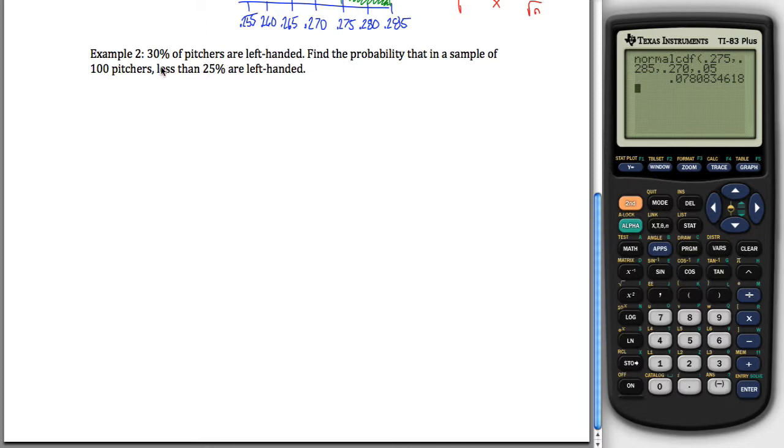We have a category, a characteristic. In this case, it's being left-handed, and we have that 30% of pitchers are left-handed. It wants to know the probability that in a sample of 100 pitchers, less than 25% are left-handed. So note, there's nothing in here about standard deviation, it just gives us these percentages.